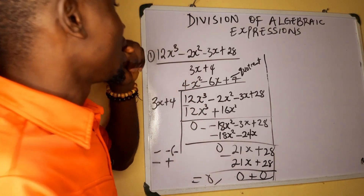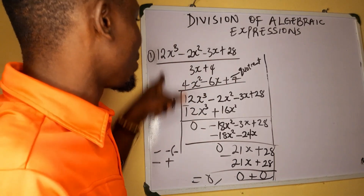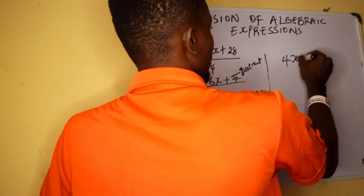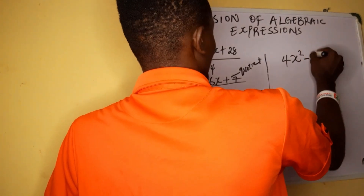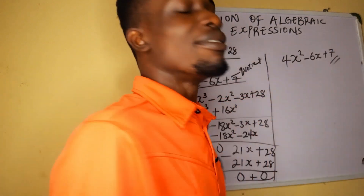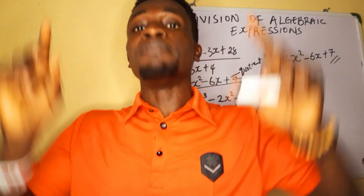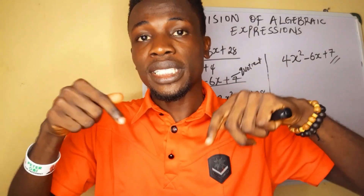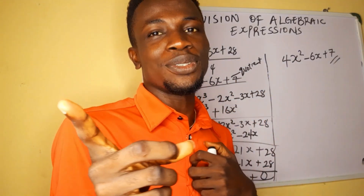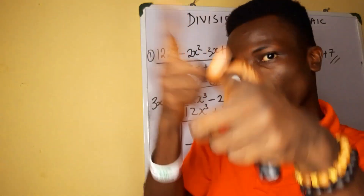So the quotient we get after dividing is 4x squared minus 6x plus 7. I hope you understand this. If you don't, please come to the comment section and talk to me — I'll be waiting for you there. See you in the next video.